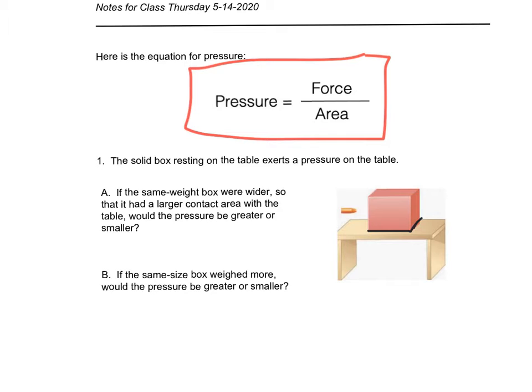If that box were wider, then the contact area would increase. And so what we have there is we have a same force, but we have a larger area. So A has gotten really big, and that is going to make a smaller P. So the answer to this one was smaller.